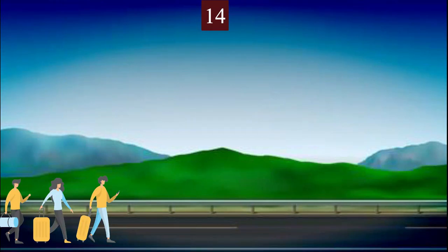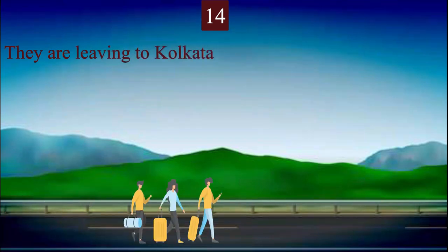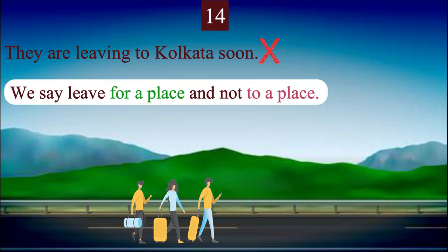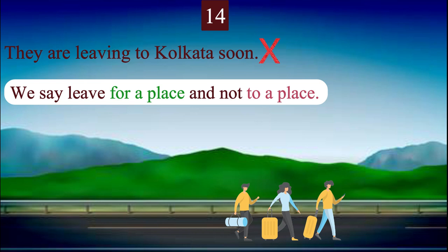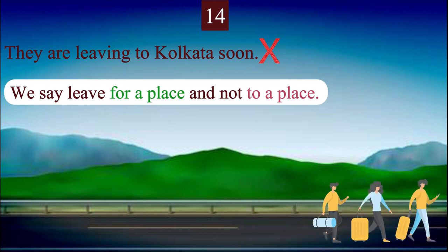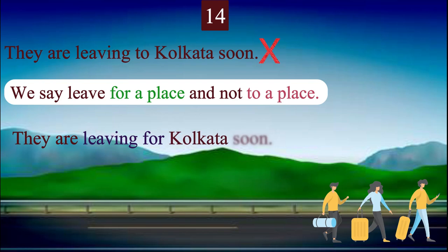Number 14 is: they are leaving to Kolkata soon — this is incorrect. We say leave for a place, and not to a place. I am reading the correct sentence, please repeat after me: They are leaving for Kolkata soon.